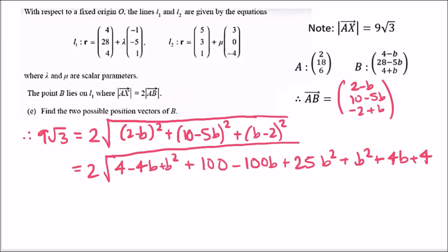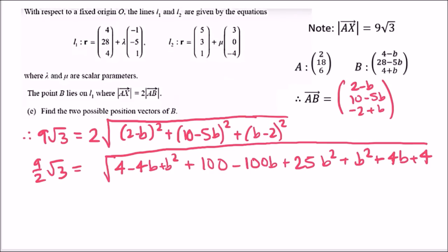Dividing both sides by 2 and squaring: (9 over 2) squared equals the sum of expanded terms. This gives a quadratic in b to solve for the two possible position vectors of B.